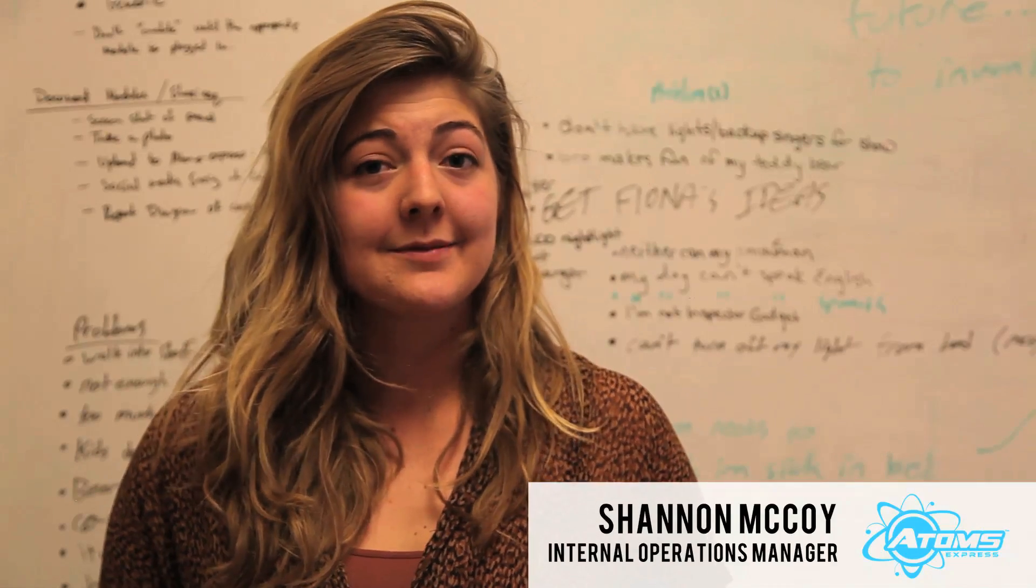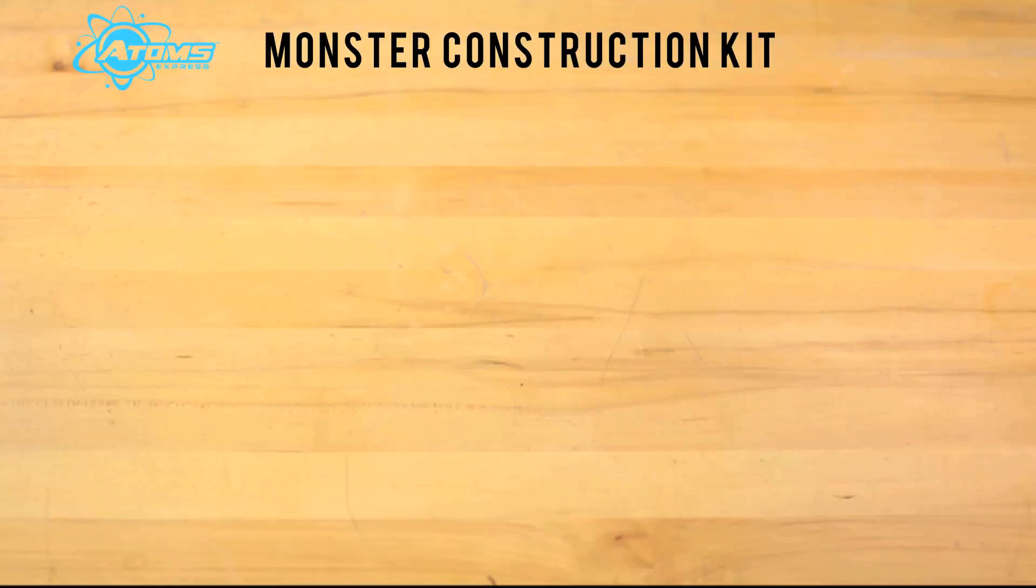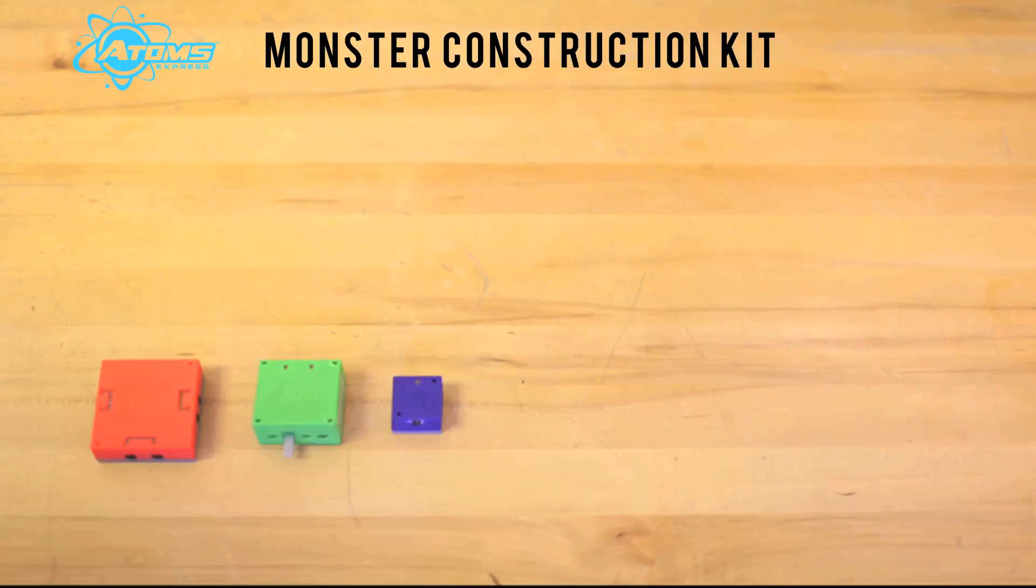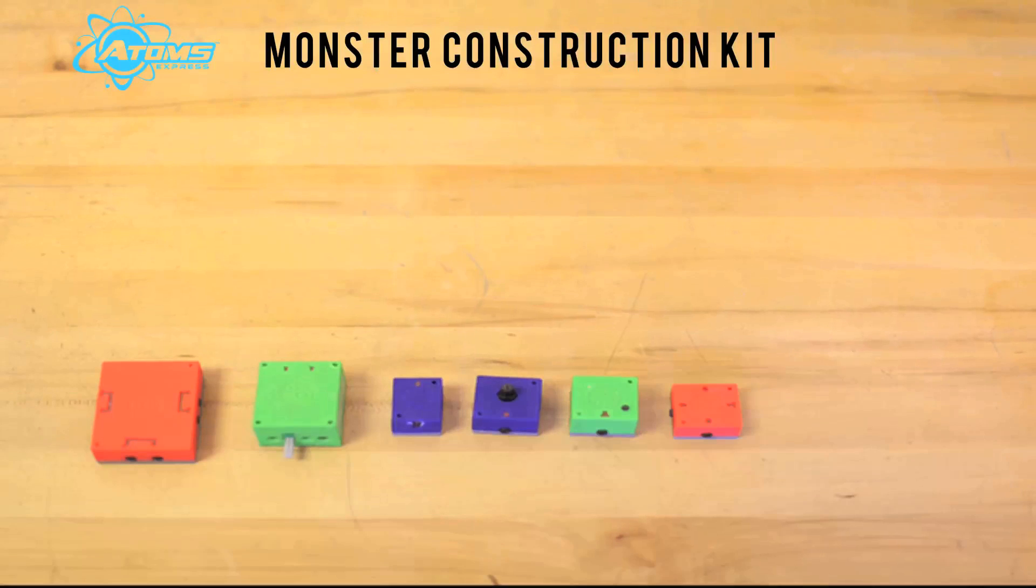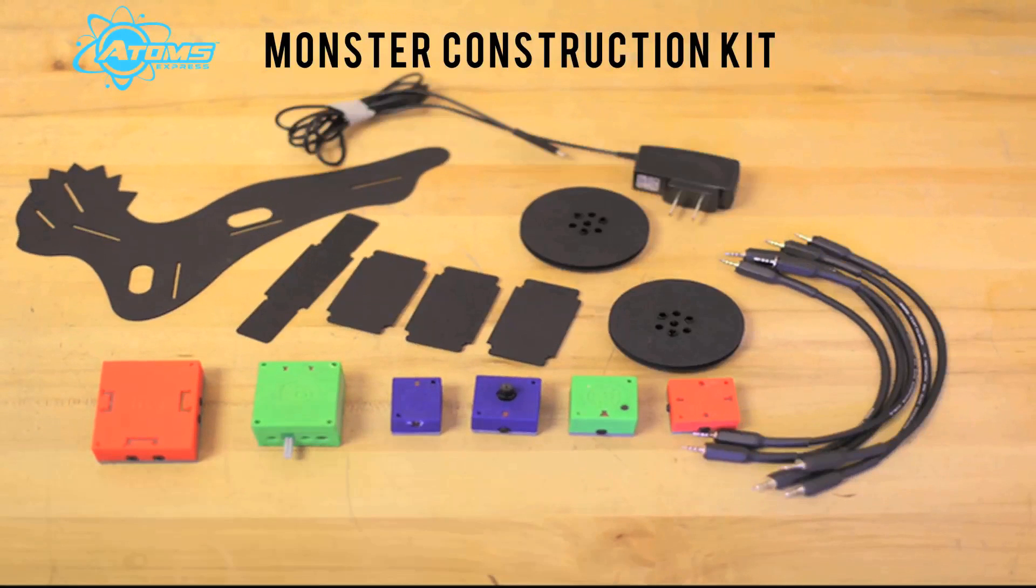With the pet monster kit you get the basic blocks that you need to make things that react and move. This kit comes with a battery, a motor, one light sensor, a knob, a record sound playback module, one splitter, some structural parts, and an AC charger.